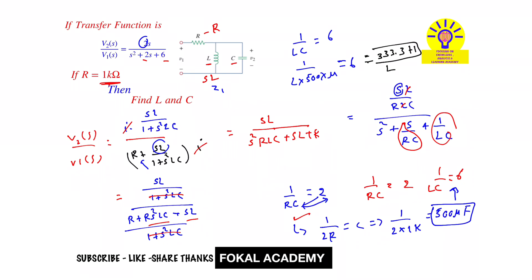So L value is 333.3 Henry and the capacitance is 500 microfarad is required to get this transfer function whenever R value is 1 kilohm. So these are the required values for the given problem and this is the process of simplification.